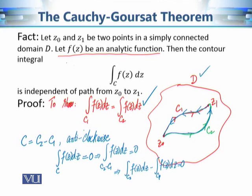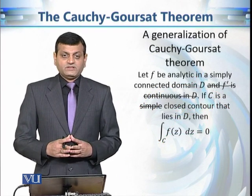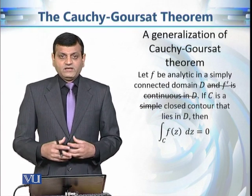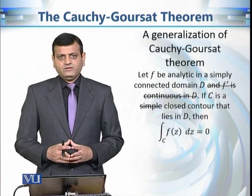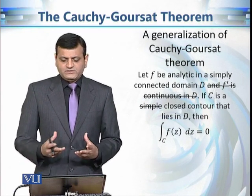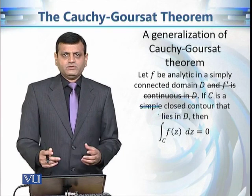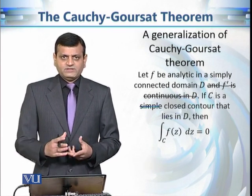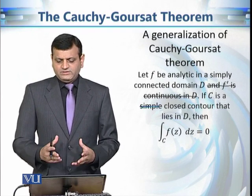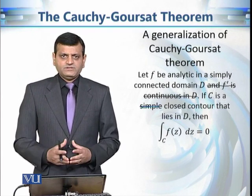The Cauchy-Goursat theorem has the powerful consequence that when evaluating a contour integral, we can choose any path from z₀ to z₁ and get the same answer. Our next discussion is about generalizing the Cauchy-Goursat theorem further — dropping the condition that the contour is simple, meaning we now allow the contour to intersect itself. The rest of the conditions remain the same.